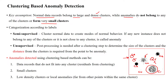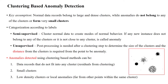A data point that does not belong to any cluster is called an anomaly. Also, if a cluster has very few data points — for example, only three data points — that is also called an anomaly. The category of anomalies is based upon labels: semi-supervised labels and unsupervised methods.